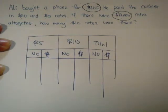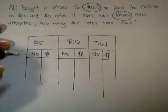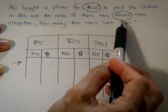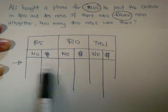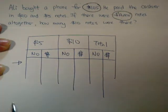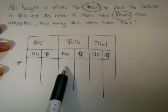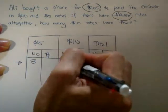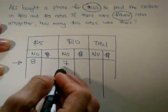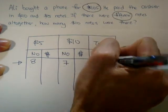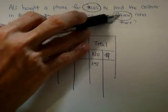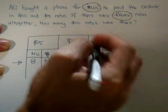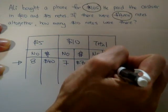Now we come to another part: how are we going to have a good start in this guess and check? If they don't give you much clue and they just give you 15, the best is to choose the center number. That is, you can choose either 8 and 7 or 7 and 8. Let's say I start with 8. Both of them must add up to 15 — the question tells me. So, 8 times 5 is 40, 7 times 10 is 70, total is 110.